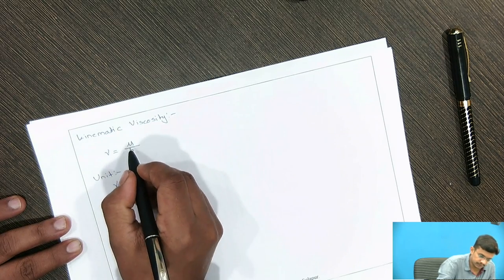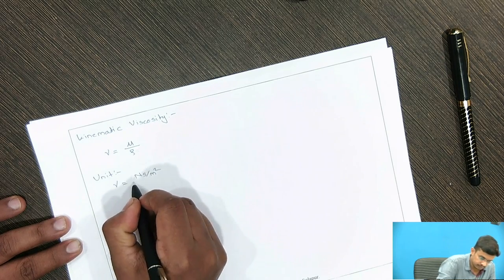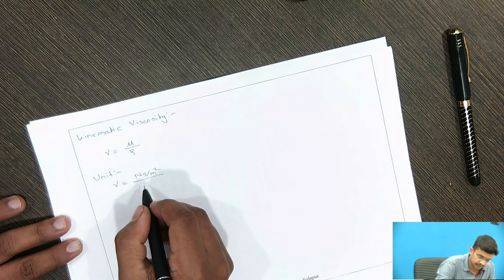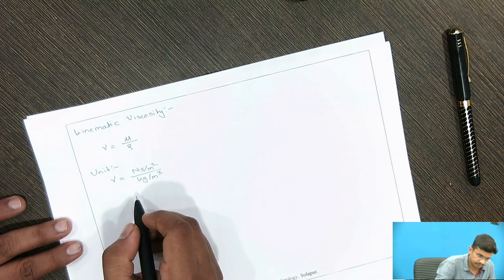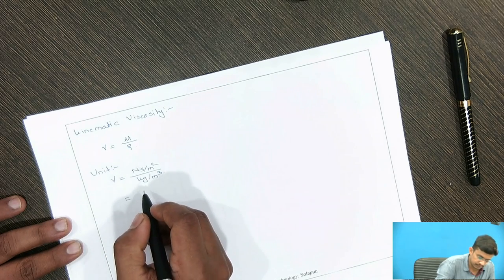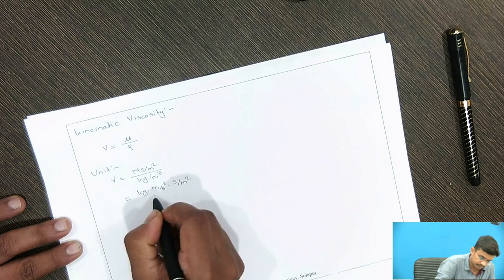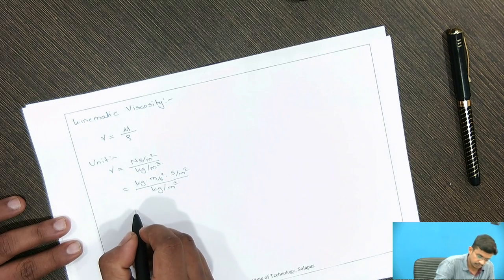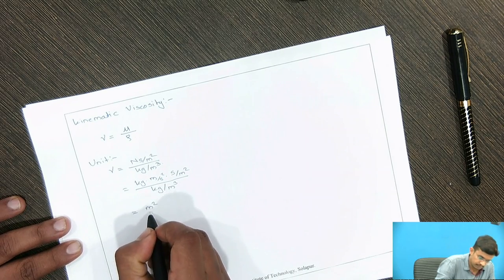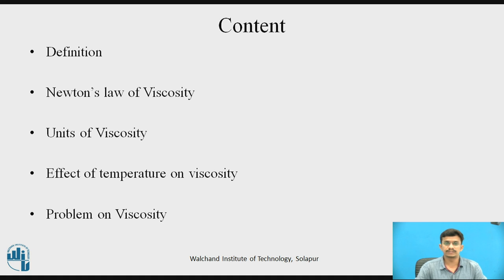The unit of kinematic viscosity: nu equals the unit of dynamic viscosity (Newton second per meter square) divided by the unit of density (kg per meter cube). Converting Newton to kg·m/s², after cancelling similar terms, we get meter square per second. This is the unit of kinematic viscosity. In the next video, we will see the effect of temperature on viscosity and problems on viscosity.